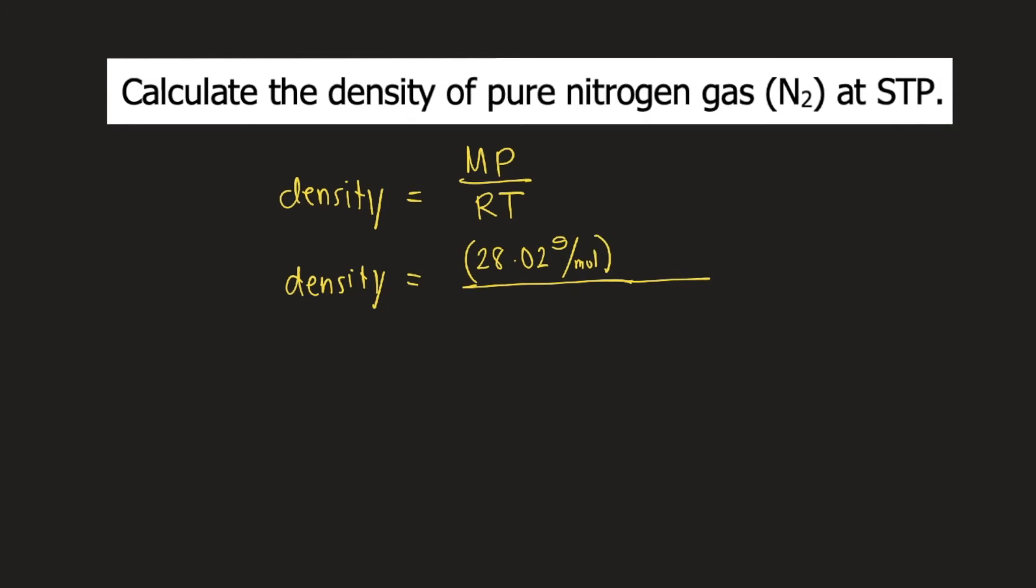P is the pressure. So the problem says that the gas is at STP. STP means standard temperature and pressure. The standard pressure is 1 atm.